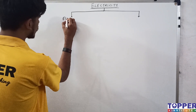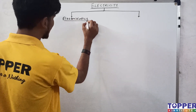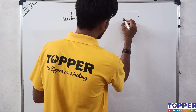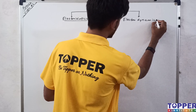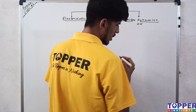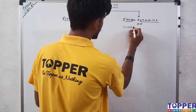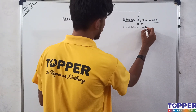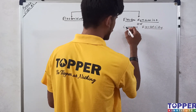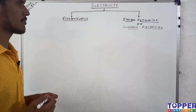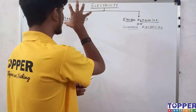First of all, let's classify electricity. Electricity is classified into two branches: one is Electrostatics and the other is Electrodynamics. Electrodynamics is also called Current Electricity — that's what the ICSE chapter is named. So we have two branches: Electrostatics and Electrodynamics.